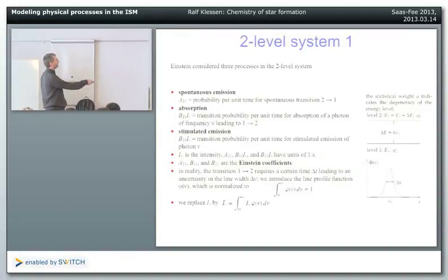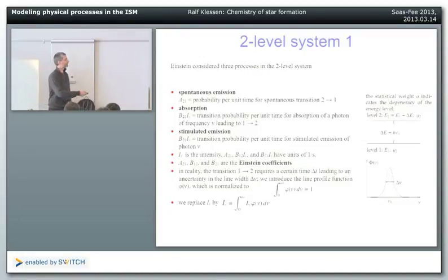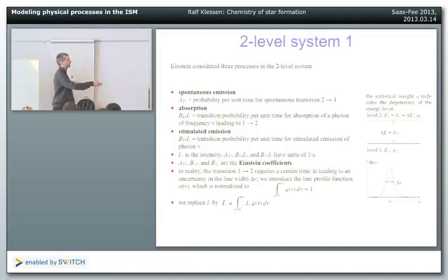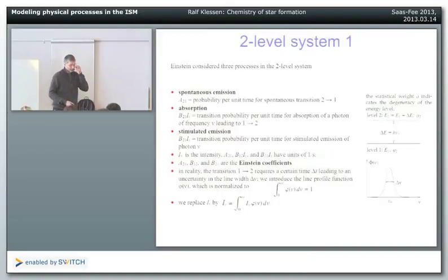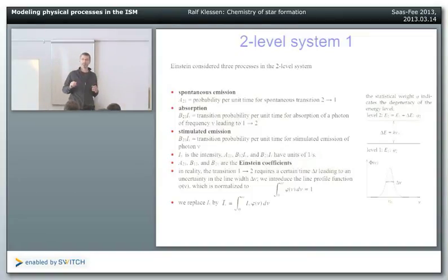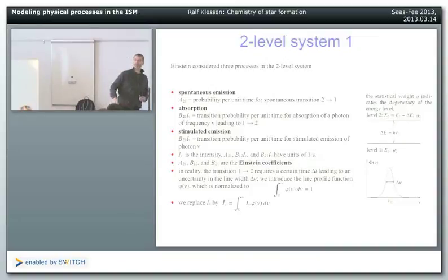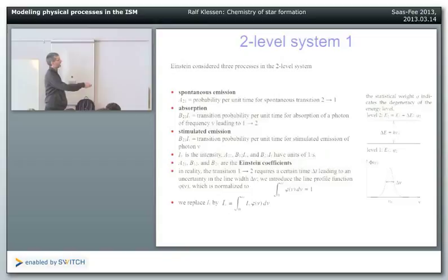Einstein also proposed stimulated emission: if you're already in the excited state and a photon comes along, it stimulates a transition down and you suddenly have two photons going coherently together. Stimulated emission has transition probability B21 times the intensity. There is a natural line width to these transitions - by Heisenberg's uncertainty principle the transition duration converts into an energy uncertainty, giving a Lorentz profile rather than a delta function. It is therefore better to work with frequency-integrated intensity. These are the famous Einstein coefficients A21, B12, and B21.